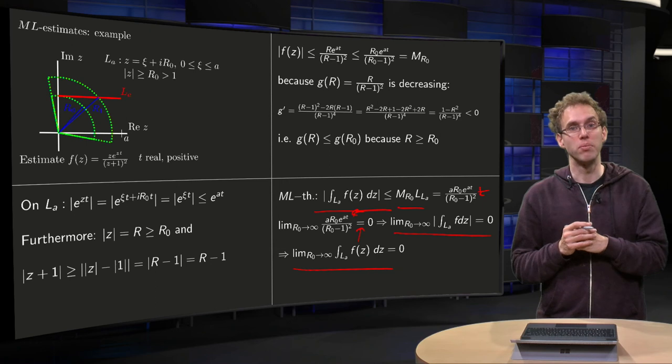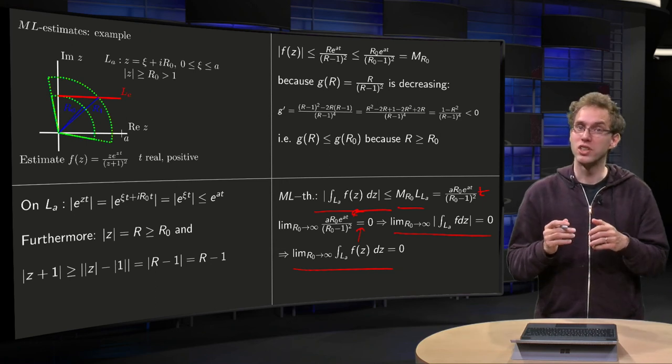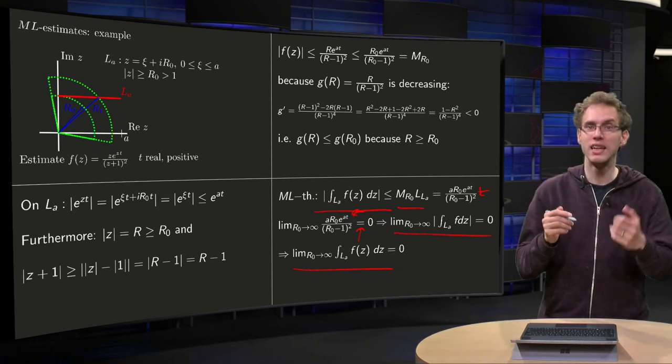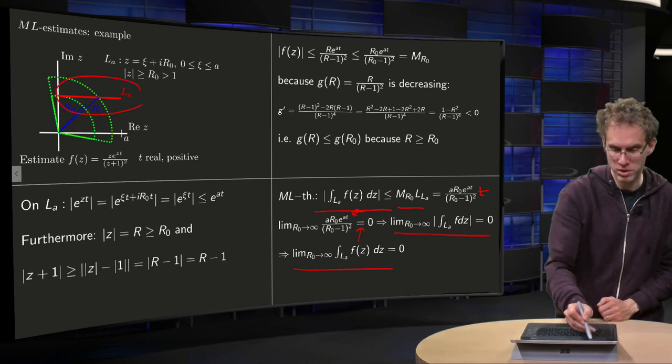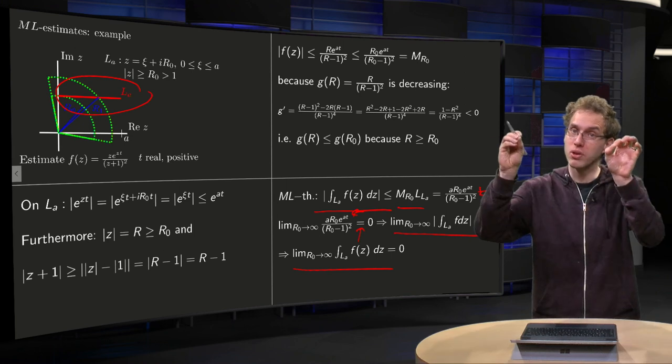So this is an example of an ML estimate which is slightly harder, where the problem is mainly in the fact that your f does not nicely live on the circle. But you have to work a bit harder because the f was living on the line.